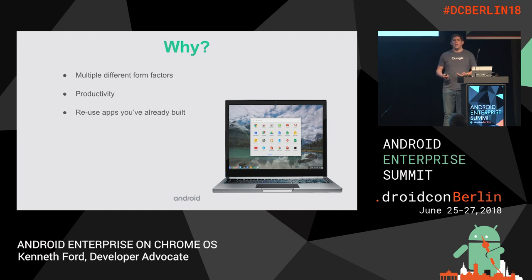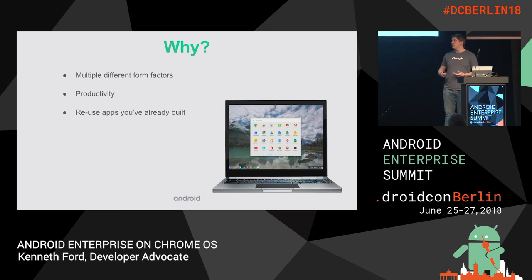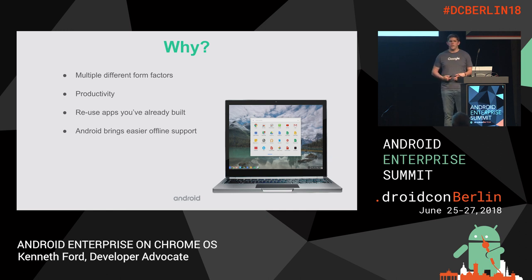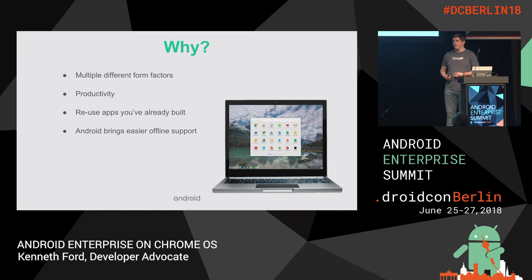The platform is really built for productivity, so having a native keyboard and trackpad that people are used to will allow certain tasks to be done substantially faster. You get to reuse apps you've already built. A lot of times when people talk about Chrome OS, they think about web, so bringing Android to the platform gives you a different way to bring the same functionality. Android also brings easier offline support — unless you've built your web apps as PWAs, it's probably easier to bring offline support to an Android app, since SQLite databases and data persistence are natively built into the platform.